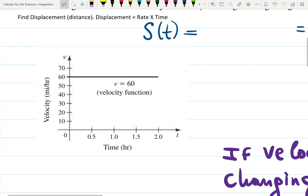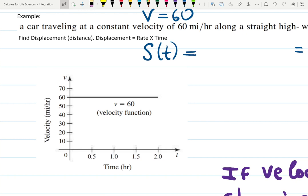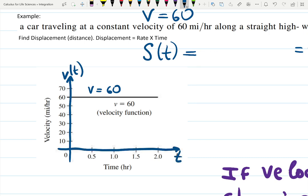Let's draw it. The function v = 60, in Cartesian coordinates where the output is v(t) and input is time t, is a constant function parallel to the t-axis. It starts at t = 0 and ends at t = 2 hours. It's always 60 — at one hour, at 1.5 hours, it's still 60.